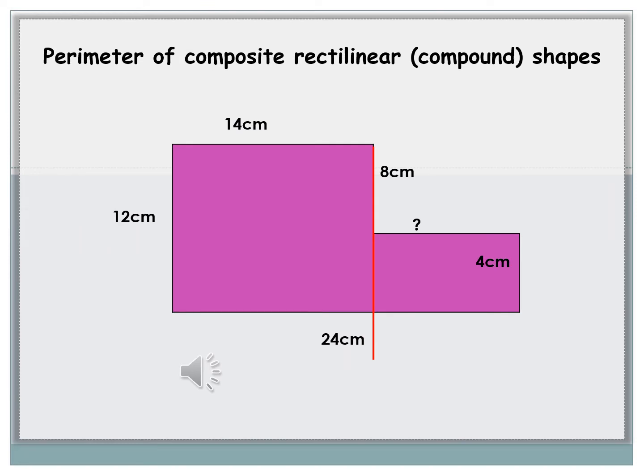So far we have found perimeter of rectangles, but what do we do when we have shapes that look like this one on the screen? This shape is called a composite rectilinear shape, and what that is is two rectangles or squares put together to make a shape just like this.